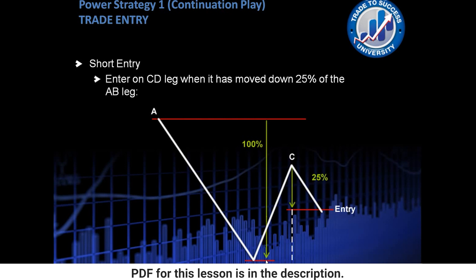So you work out the move from A to B, find out what 25% is, i.e. divide it by 4, and that's how many pips we need it to move down from point C to enter. Here we're obviously entering for a short.